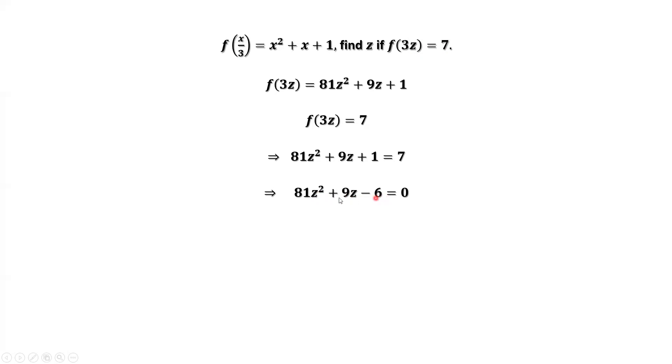Each term has 3 as a factor. Both sides divided by 3, we have 27z squared plus 3z minus 2 equals 0.